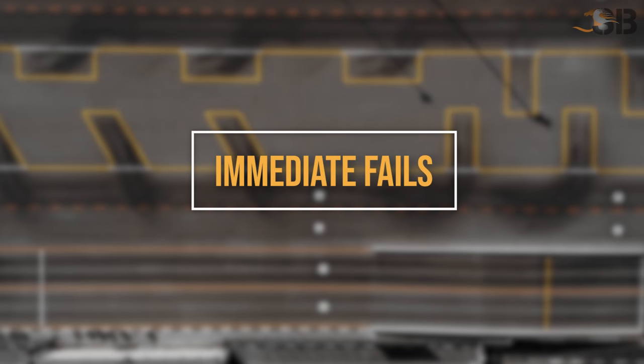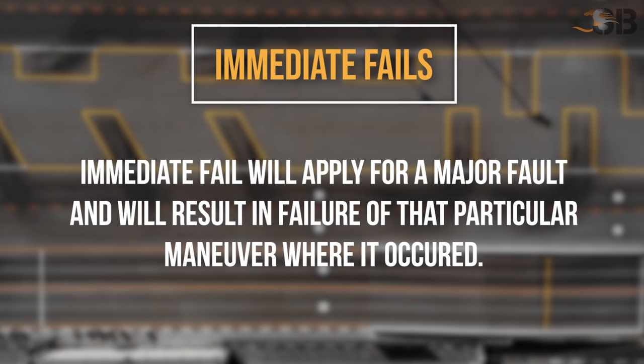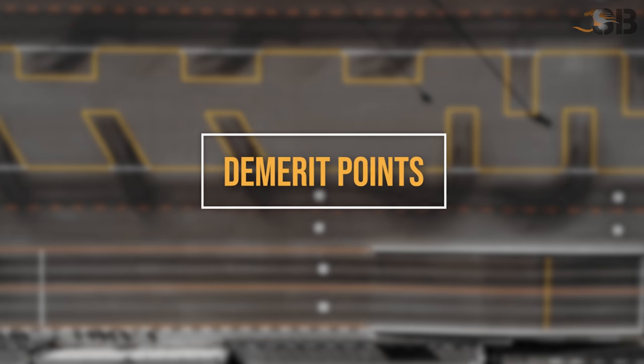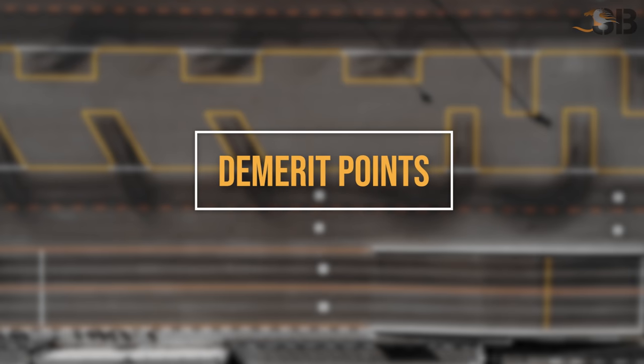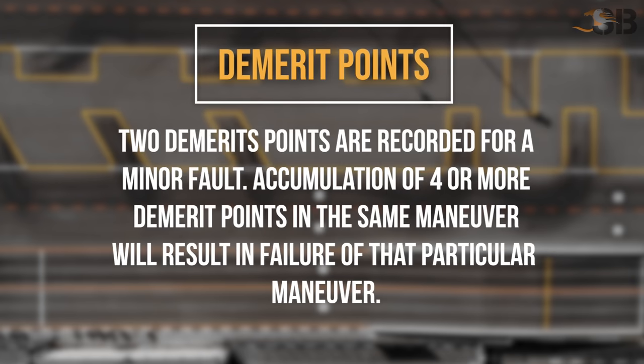Immediate Fail will apply for a major fault and will result in failure of that particular maneuver where it occurred. Demerit Points: two demerit points are recorded for a minor fault. Accumulation of four or more demerit points in the same maneuver will result in failure of that particular maneuver.